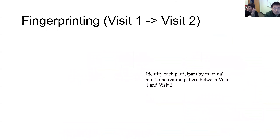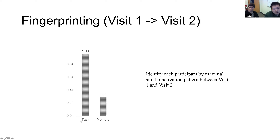To solidify these differences, we used a fingerprinting approach: using each participant's activation pattern from visit one to find their maximally similar pattern in visit two to identify the same participant. Using the task contrast, we can correctly identify 100% of participants in visit two. But using the memory contrast, identification rates drop to 33% — although it must be emphasized that chance is only 4% with 24 participants.